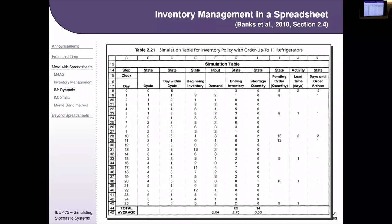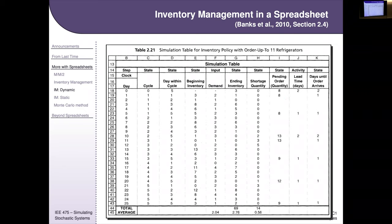Now we can implement the simulation — the full formulas are in section 2.4 of your textbook. Notable in the spreadsheet are explicit state columns: beginning inventory, ending inventory, pending order quantity, and days until order arrives. Rows represent time steps — each row is a day — similar to the muffin simulation.